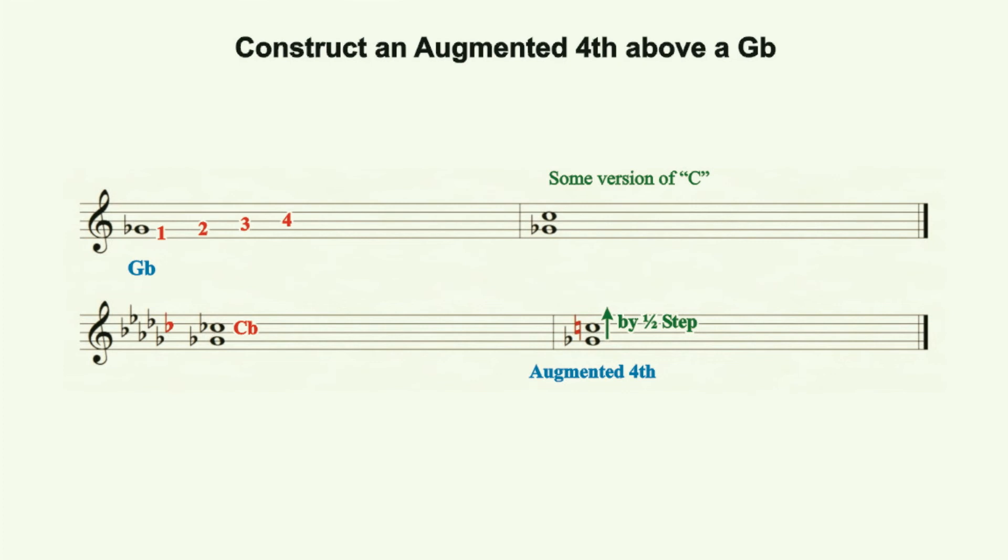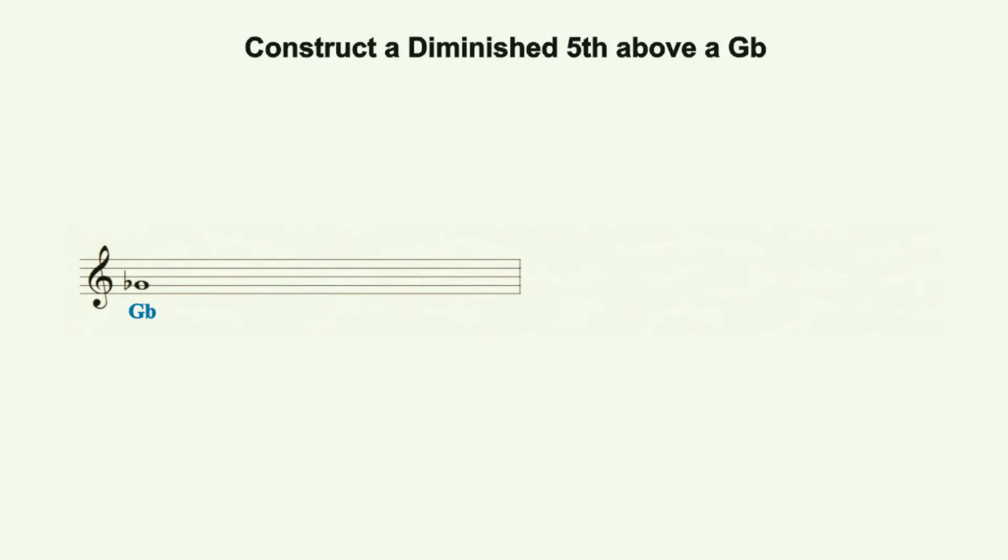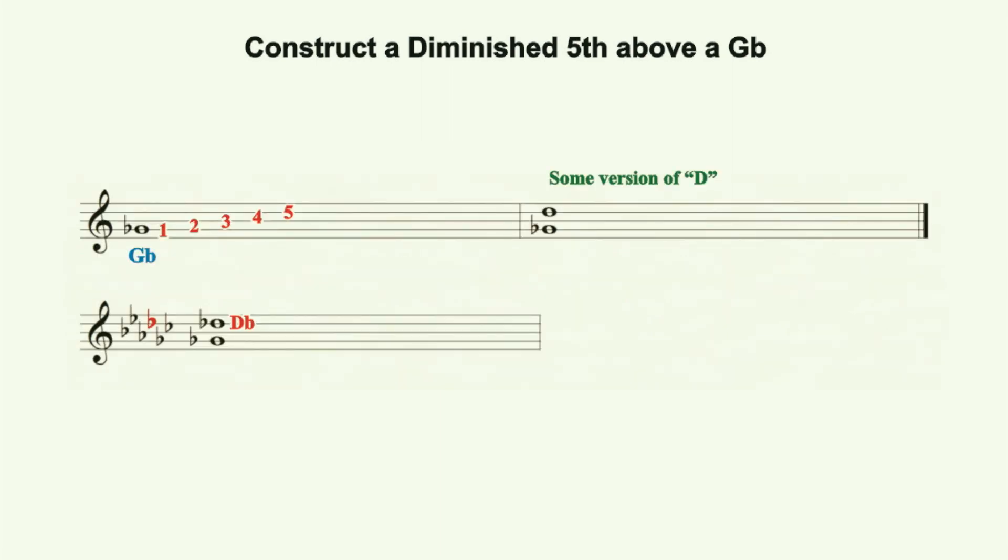Build a diminished 5th over G flat. Notate the G flat for the desired pitch placement. Beginning at the G flat baseline, count upward 5 lines and spaces. The 5th will be some sort of D. Using the key signature for G flat major, observe that the diatonically occurring D is a D flat. The diatonic 5th, in any major key, is a perfect 5th. To change the perfect 5th to a diminished 5th, we must decrease the pitch of our D flat by one half step to a D double flat. The D double flat is anharmonically equivalent to a C natural, and therefore, the diminished 5th will sound the same as our G flat to C augmented 4th constructed previously.